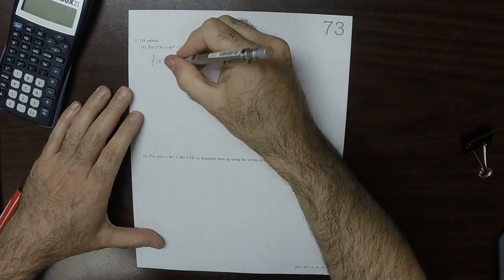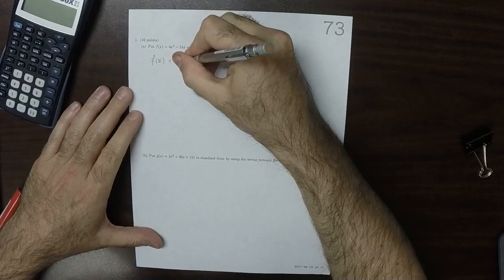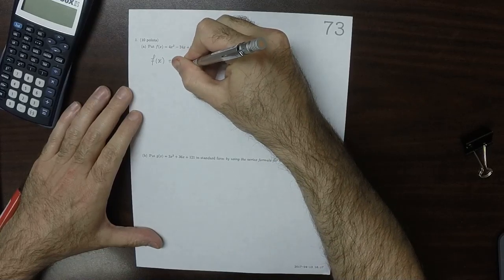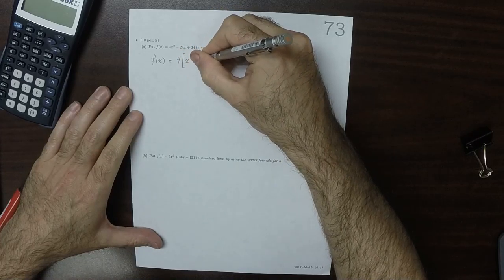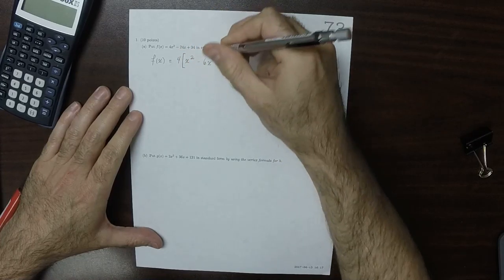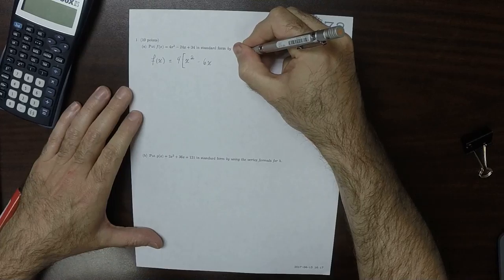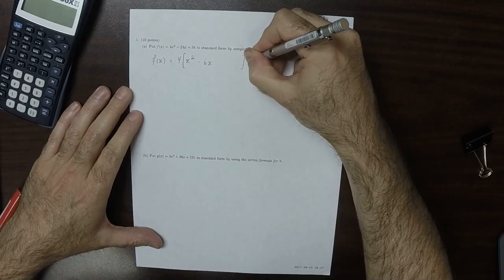By completing the square, we'll fix it by factoring out the 4, so that it looks like 4 times x squared, and then minus 6x plus 34.